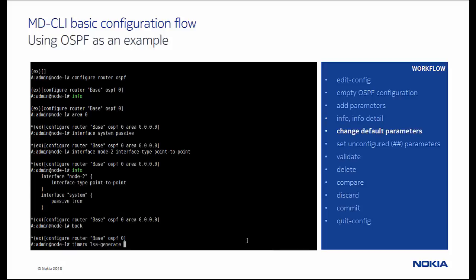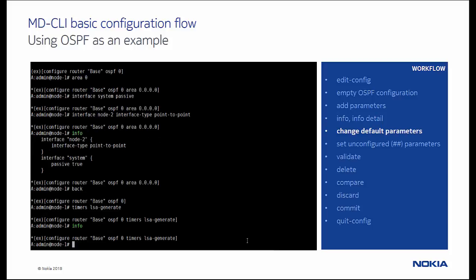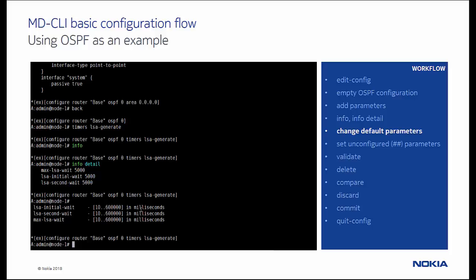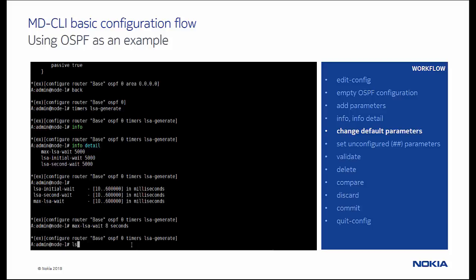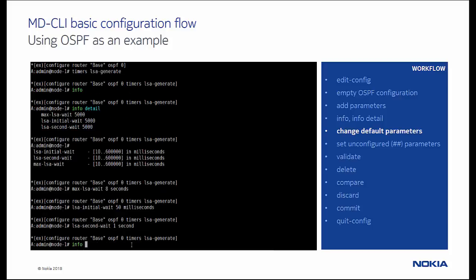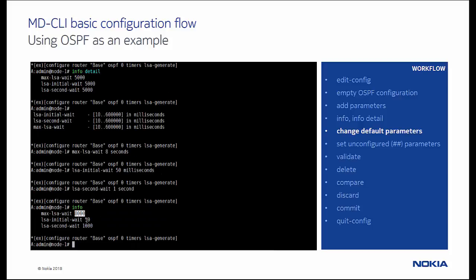Next we will check and modify some OSPF timer settings, where the default values can be seen using the info detail command. Notice that the units for these timers are in milliseconds. But since flexible input formats are supported, we can use seconds for some of the input values. We see with the info command that the timer values are automatically converted to the base unit, which is milliseconds.